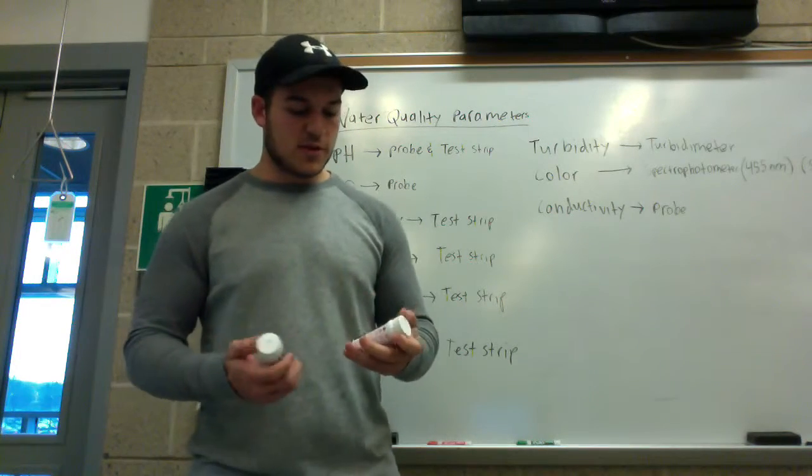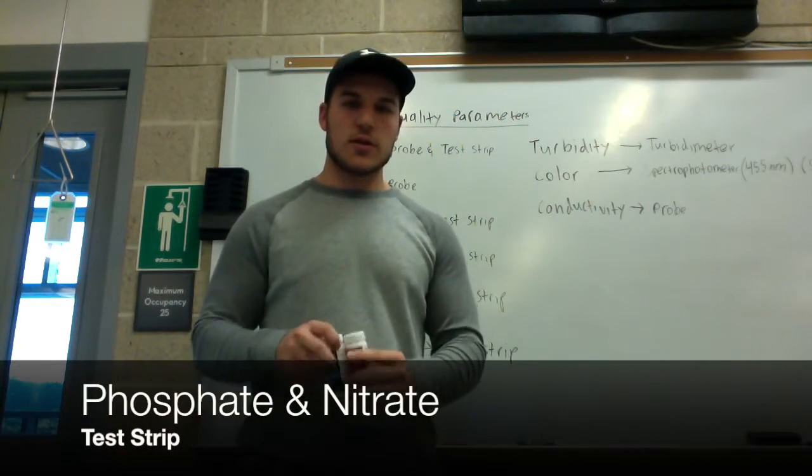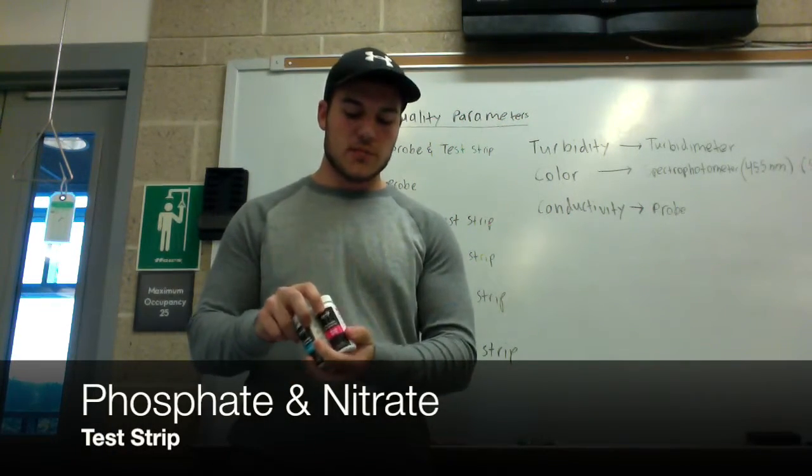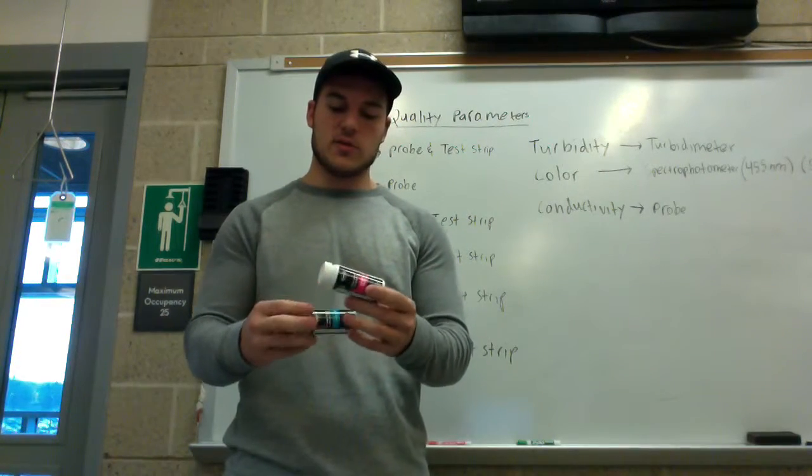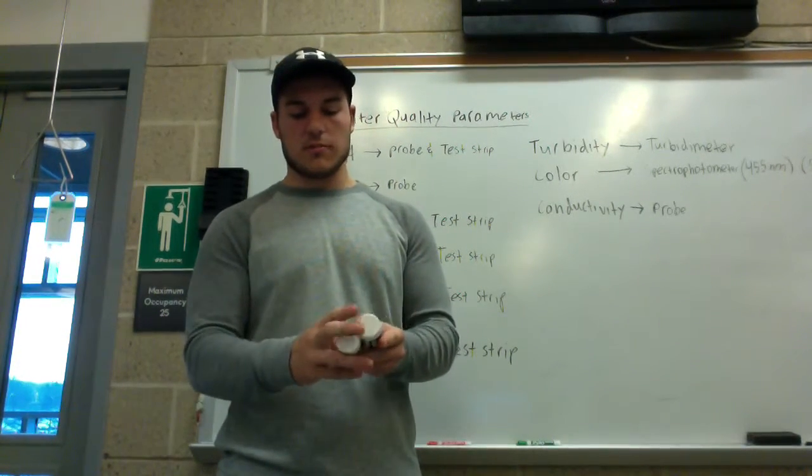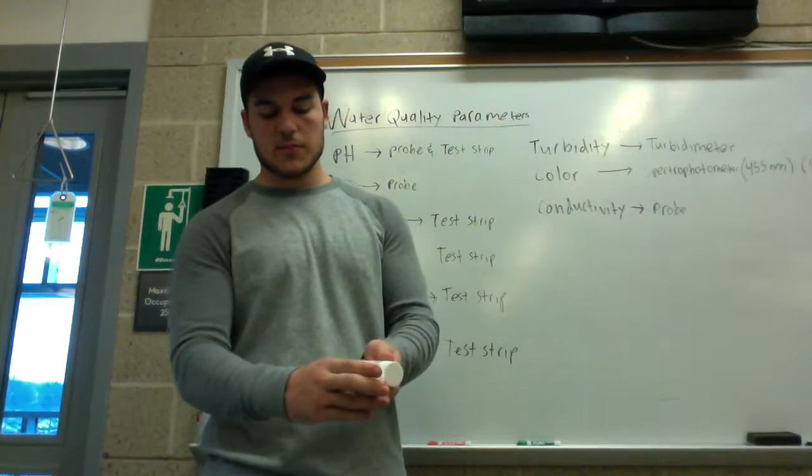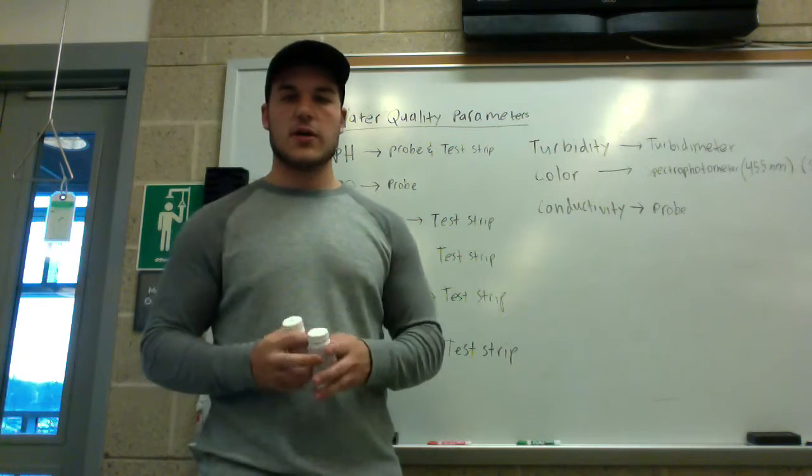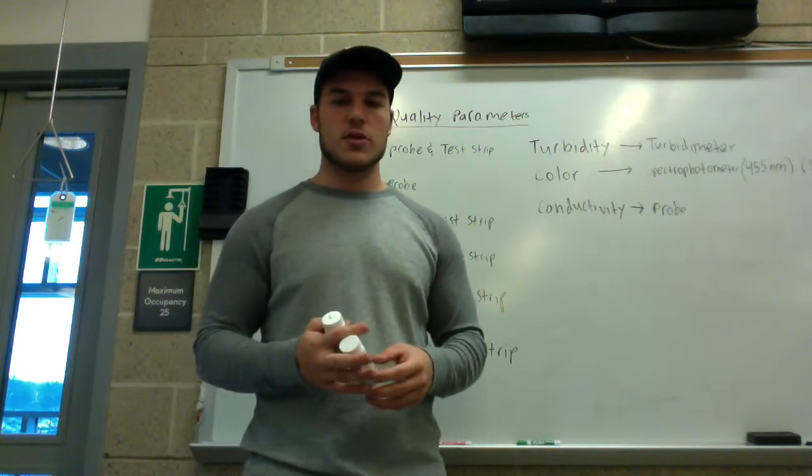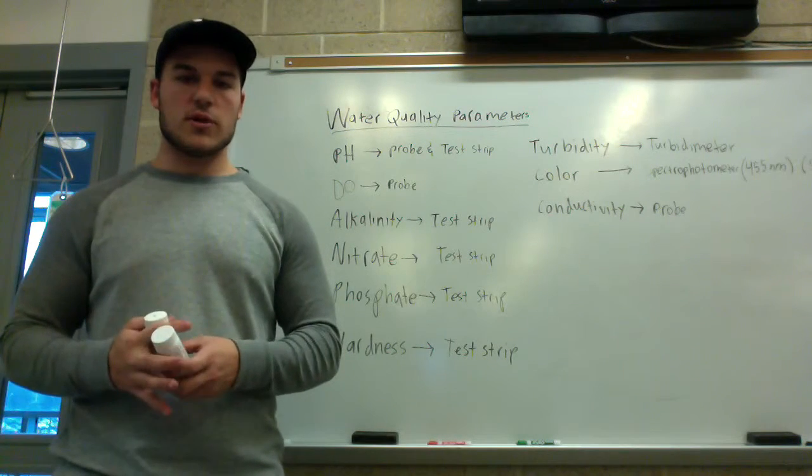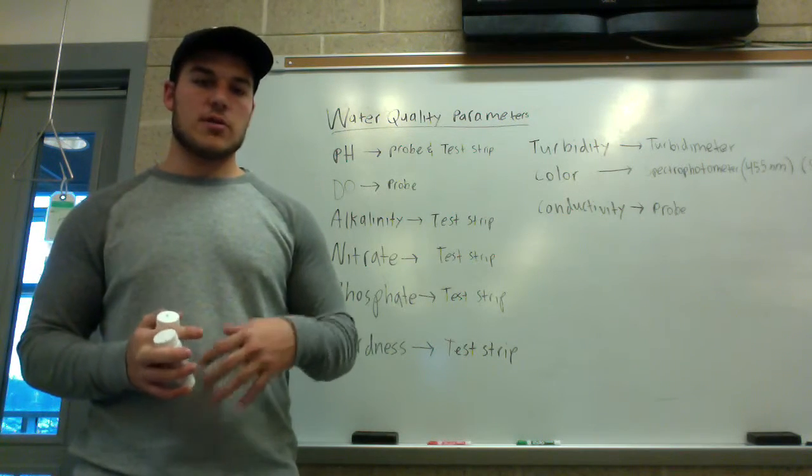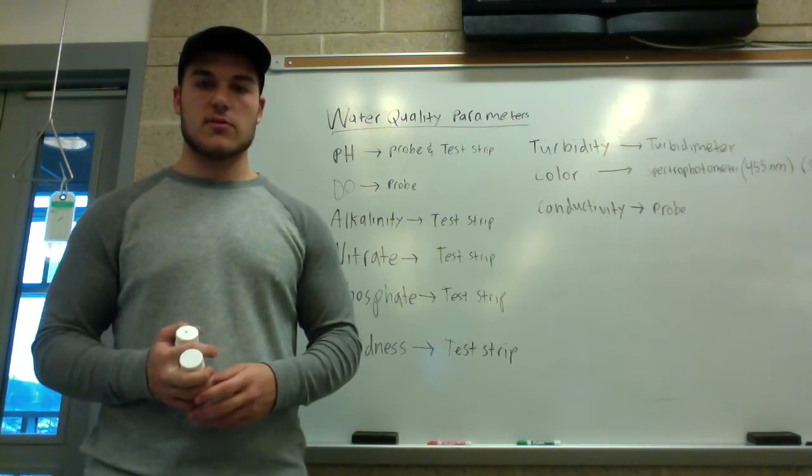The next water quality parameters we're testing are phosphate and nitrate. They both use a test strip, with directions on the back and a scale to compare your test strip to. Nitrate and phosphate are important because they're strong indicators of algae growth, as algae use them for nutrients.